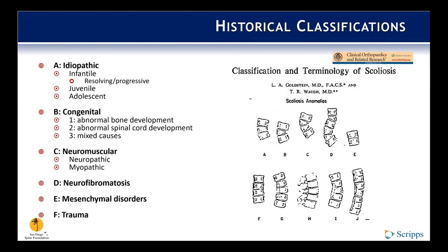In 1973, Goldstein et al. published an etiologic classification expanding on curve patterns. Idiopathic, without identifiable cause, was further divided by age: infantile under four, juvenile four to nine, and adolescent between ten years and skeletal maturity. Congenital was broken down into abnormal bone development such as failure of segmentation or formation, abnormal spinal cord development such as myelodysplasia, and mixed causes. Neuromuscular included neuropathic or myopathic scoliosis; neurofibromatosis had its own category; mesenchymal disorders included congenital conditions like Marfan's or arthrogryposis and acquired such as rheumatoid arthritis; and trauma included fractures, surgery, and radiation. While descriptive for natural history, it did not provide accurate classification to compare cases or guide treatment.